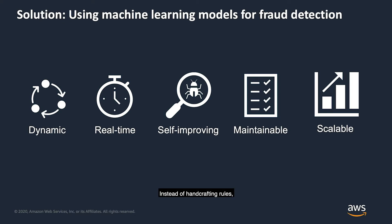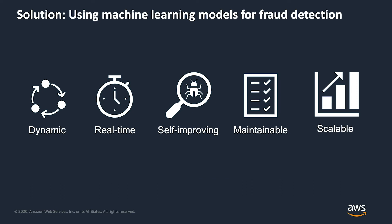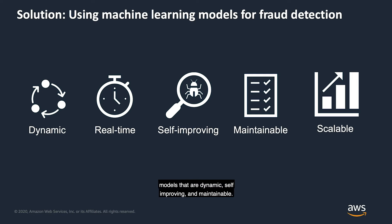So what can you do to ensure the growth of your business in the presence of widespread online fraud? Instead of handcrafting rules, our solution uses machine learning to learn and adapt to the behavior of fraudsters. Machine learning allows us to create models that are dynamic, self-improving, and maintainable. Importantly, they can scale together with your business.